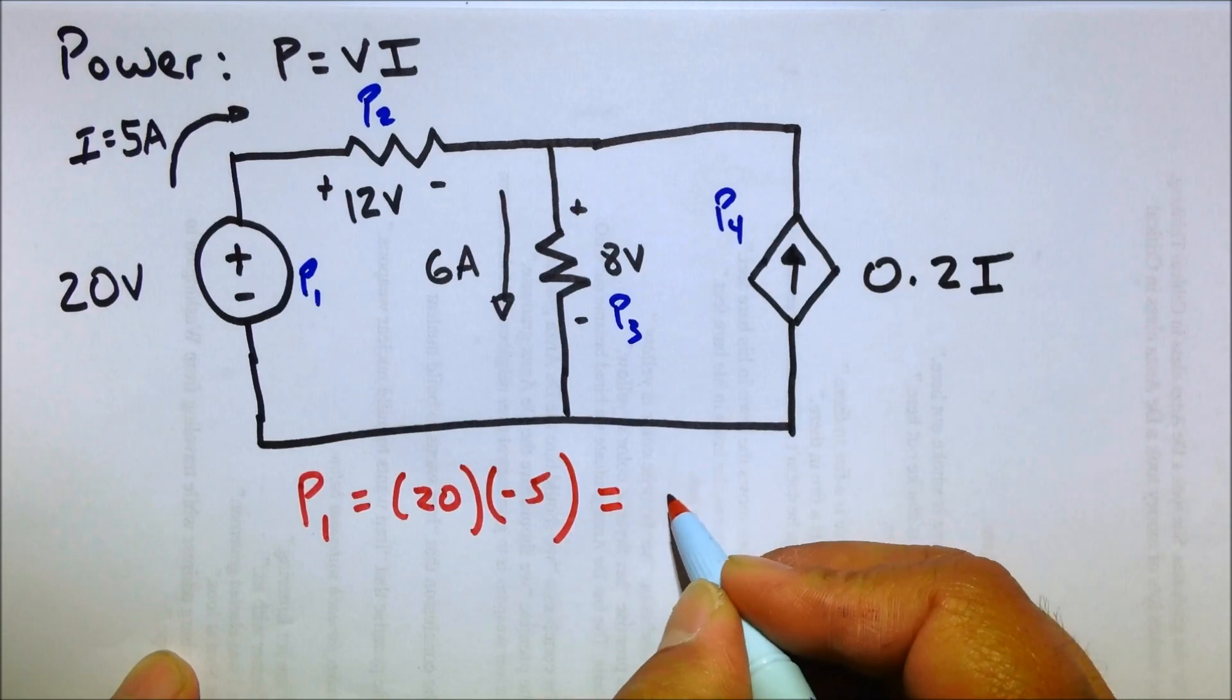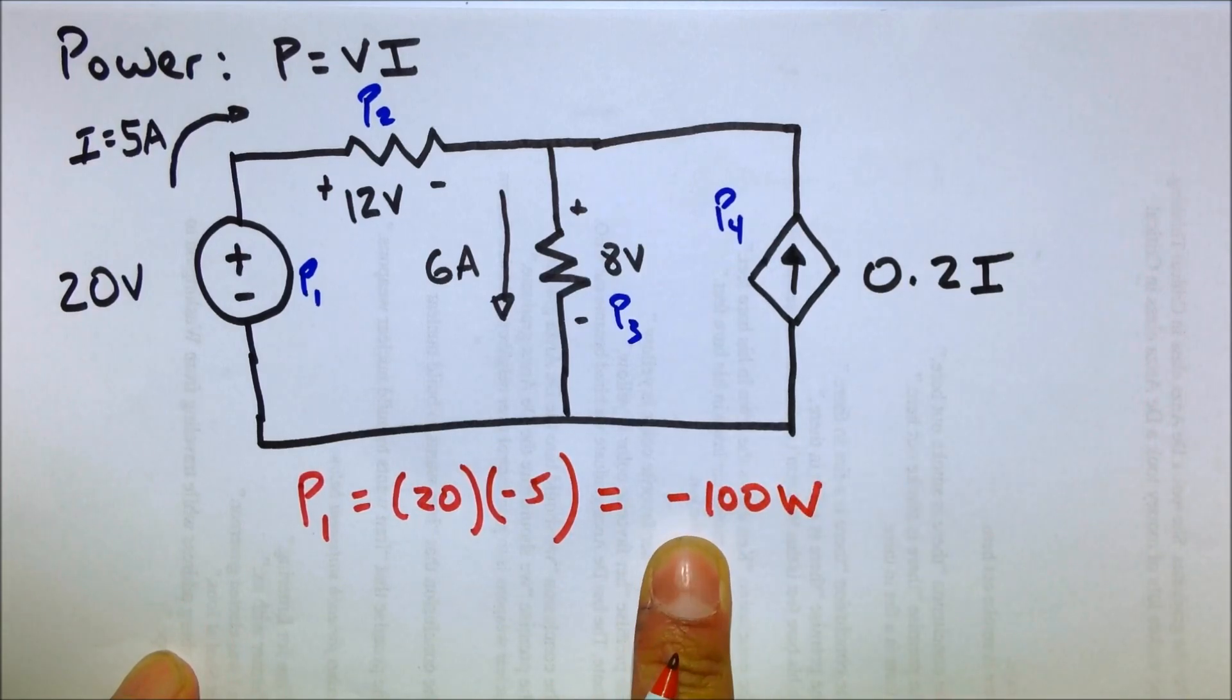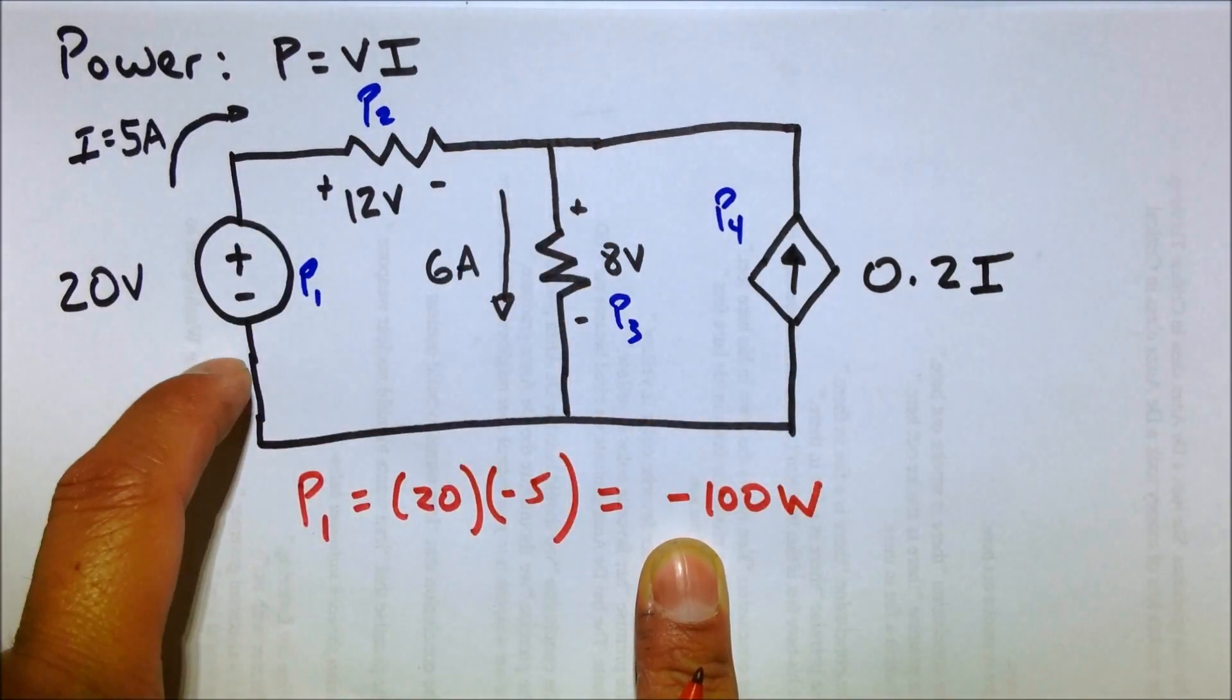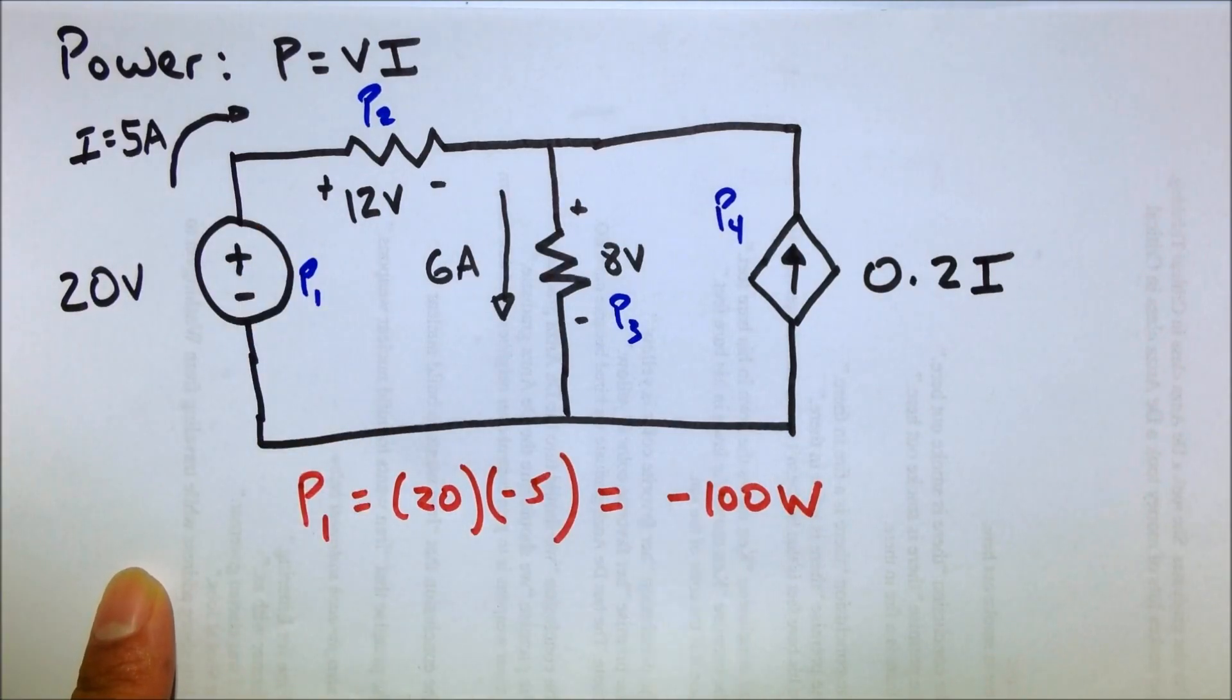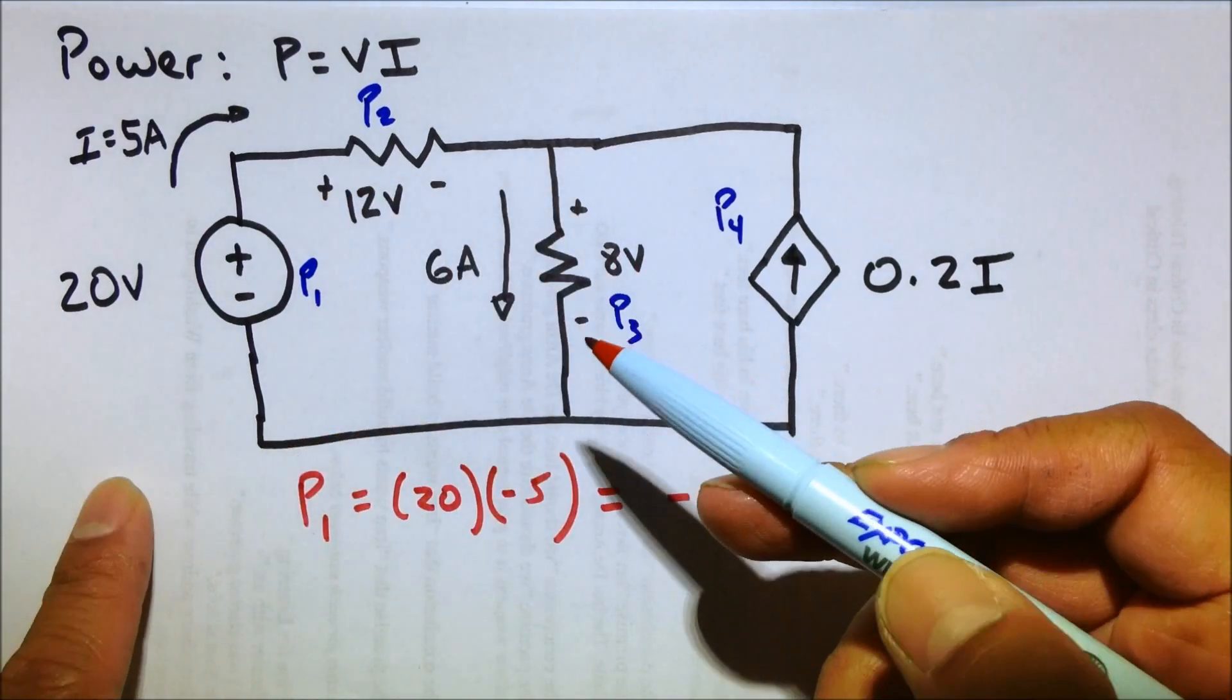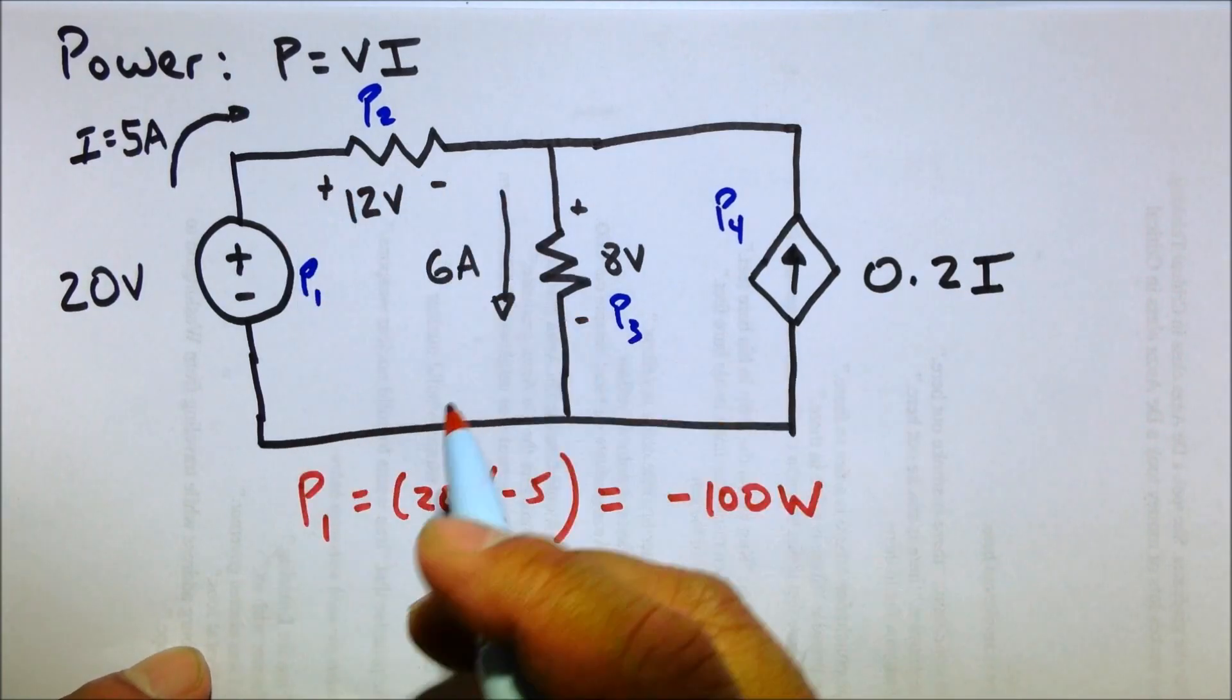That's going to give us negative 100 watts. And we're using this minus sign just to indicate that the power is leaving. It's not being consumed by this. It's being supplied by it. So we're going to indicate that by saying minus. Because usually, when something is being consumed, or at least in convention, when something is being consumed, we'll usually refer to it as a positive power.